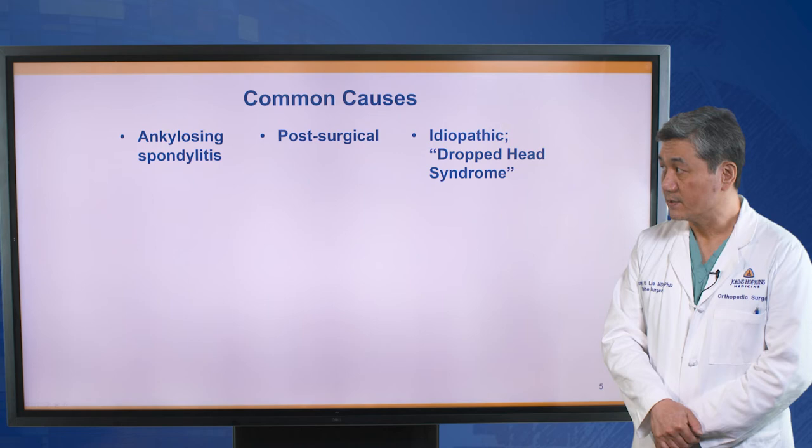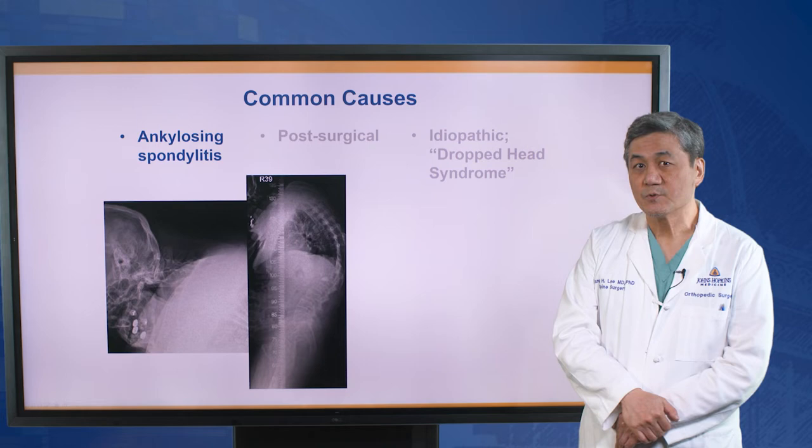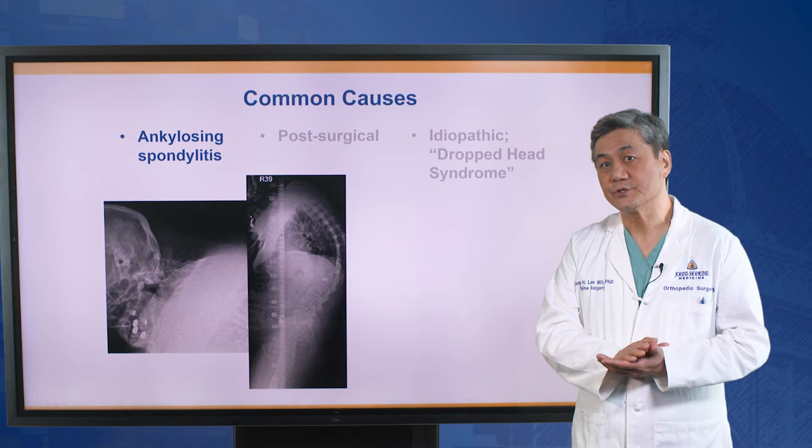The common causes of chin on chest deformity are ankylosing spondylitis, post-surgical deformity, and idiopathic causes. Ankylosing spondylitis is a type of spine inflammation that ends up causing spine fusion and kyphotic deformity.